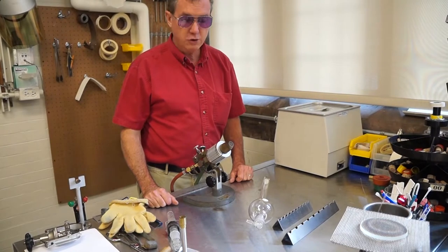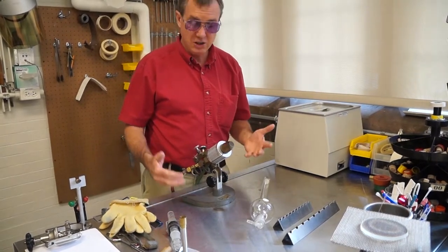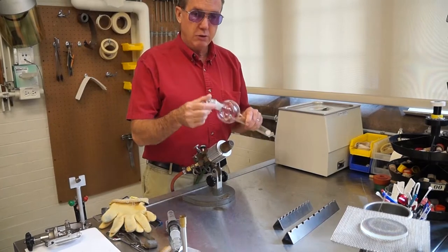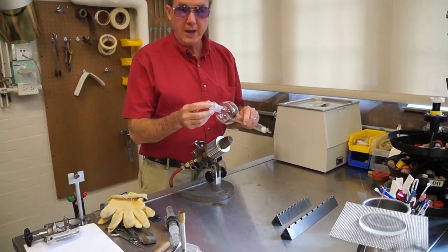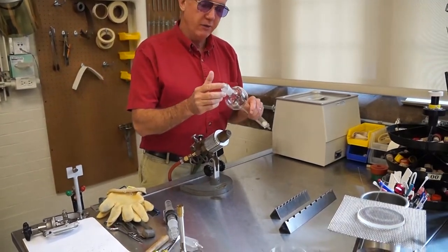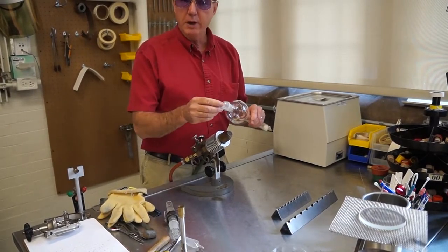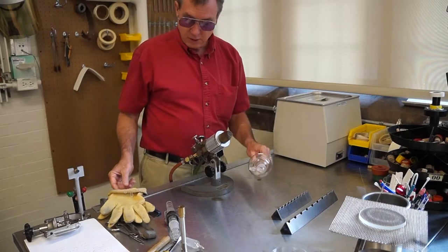In this video, I want to go over how to get ground glass joints unstuck. This happens when your inner and outer joints are put together without any grease, any Teflon tape, or Glendman rings. I cover that in one of my other videos on how to use that stuff.